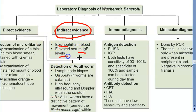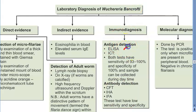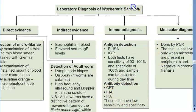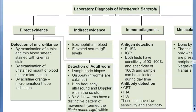For indirect diagnosis, in filariasis serum IgE levels are elevated. Immunodiagnosis includes antigen detection and antibody detection using ELISA and ICT. However, antibody detection has low sensitivity and specificity. For molecular diagnosis, PCR can also be used.